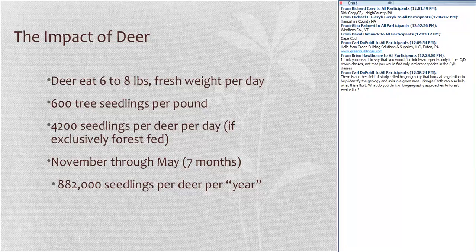Because deer are browsing selectively, those 800,000 seedlings are going to be concentrated on the species that deer find most palatable, and they will disfavor eating other species. As some species are preferentially browsed, other species are being advantaged. This is a very explicit ecological interaction between two different organisms — deer and plant species — showing how one species can disfavor through its interactions one species while allowing another to be favored.